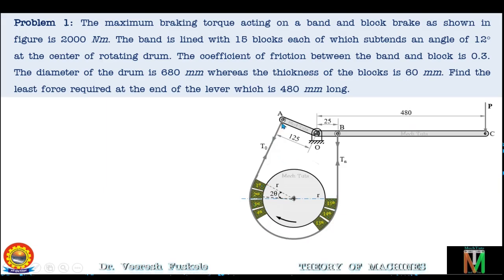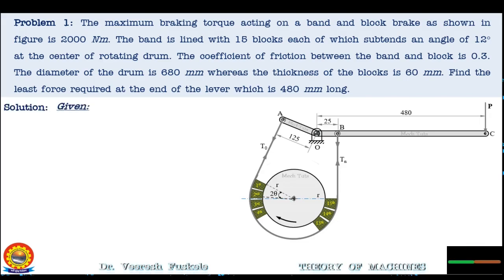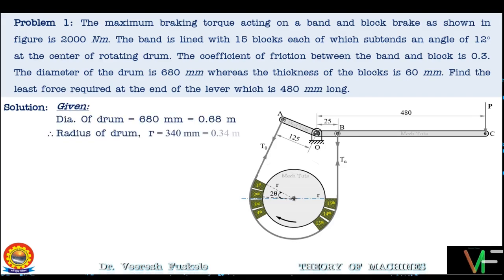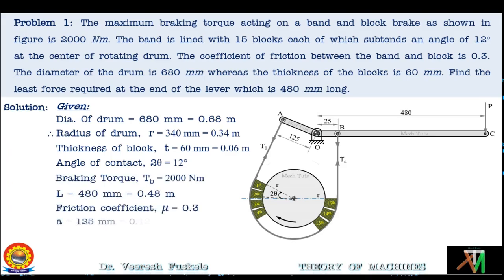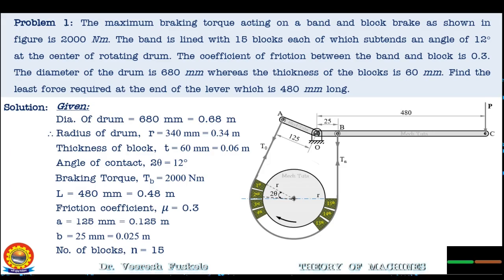The configuration has 15 blocks. The distance of end A from the fulcrum is 125 mm and the distance of end B from the fulcrum is 25 mm. The length of the lever is 480 mm, and the force P is applied at 480 mm from the fulcrum. Given parameters: diameter of drum = 680 mm (0.68 m), radius = 0.34 m, block thickness T = 0.06 m, angle of contact 2θ = 12°, braking torque = 2000 Nm, length L = 0.48 m, friction coefficient μ = 0.3, distance A = 0.125 m, B = 0.025 m, and number of blocks = 15.